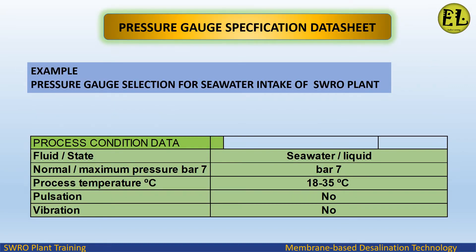Pressure gauge specification data sheet example: pressure gauge selection for the seawater intake of a SWRO plant. Process condition data — fluid: seawater, state: liquid, normal/maximum pressure: 7 bar, process temperature: 18 to 35 degrees Celsius, pulsation: no, vibration: no.